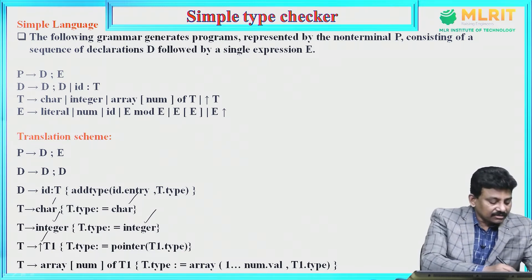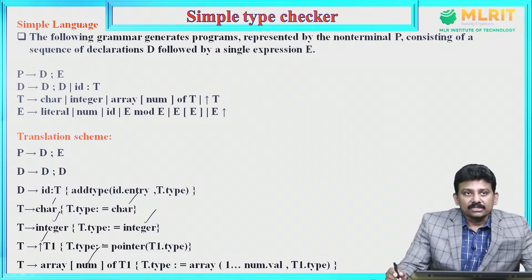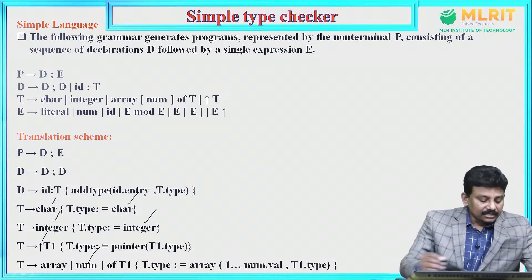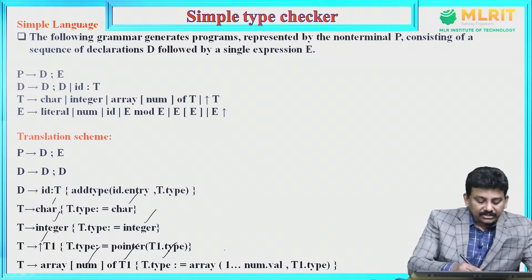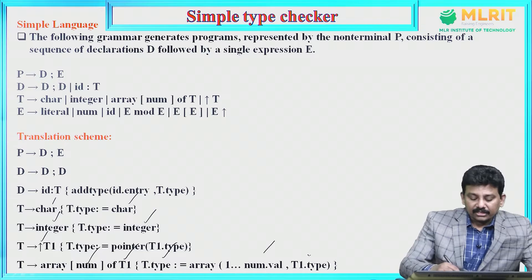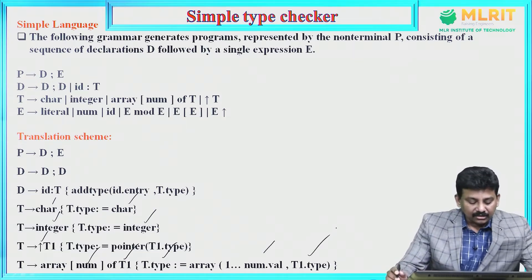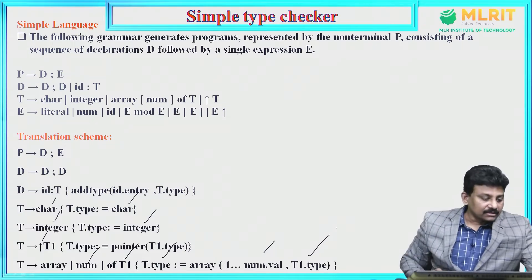T derives array of number of T1. This number is the index — that is, the number of elements in the array — and T1 represents the type of the elements. Then T.type = array(1 to num.value, T1.type), meaning we represent an array of N number of elements of type T1. This is the simple language specification.